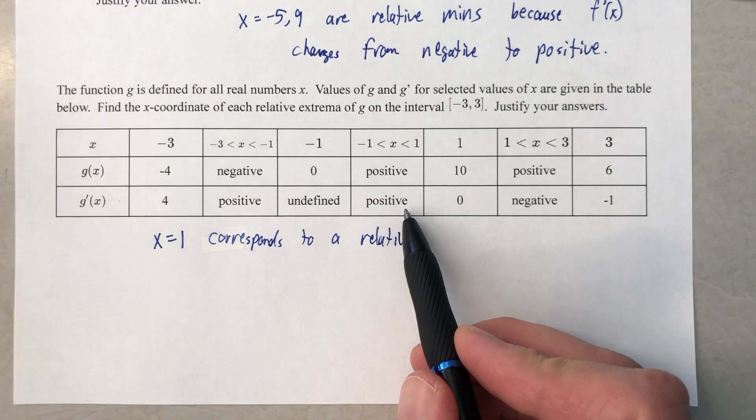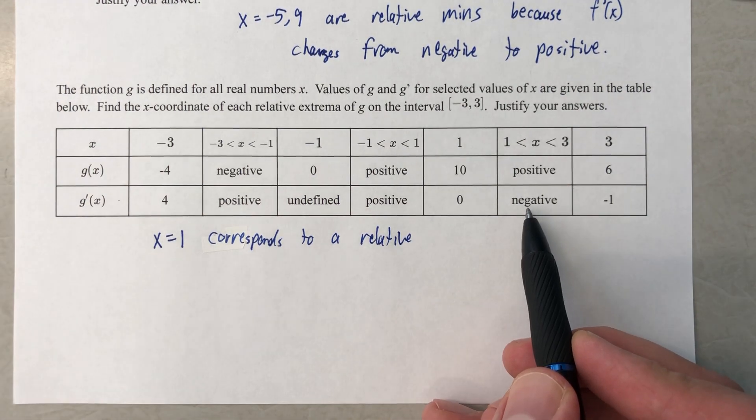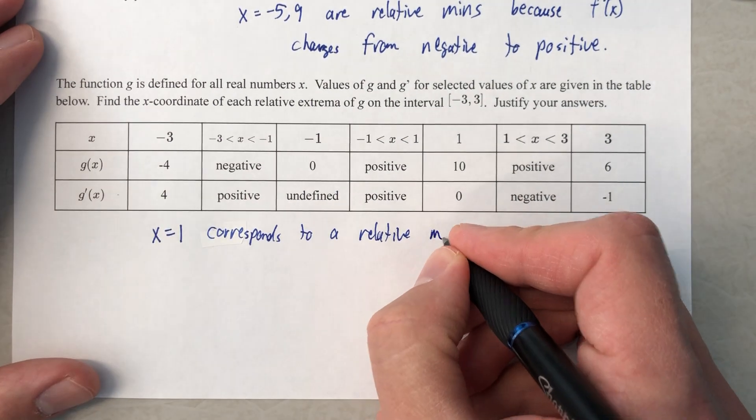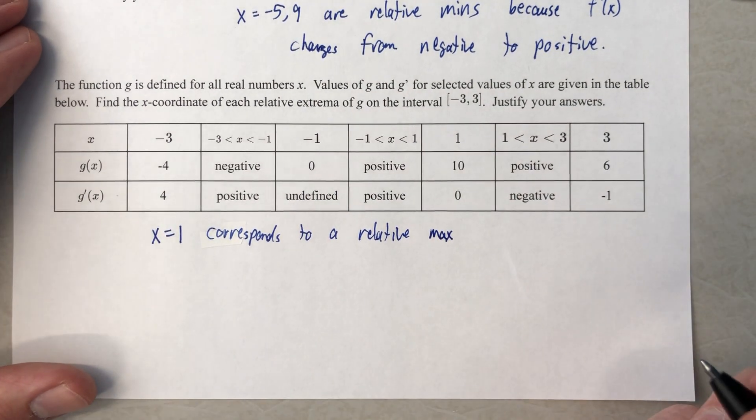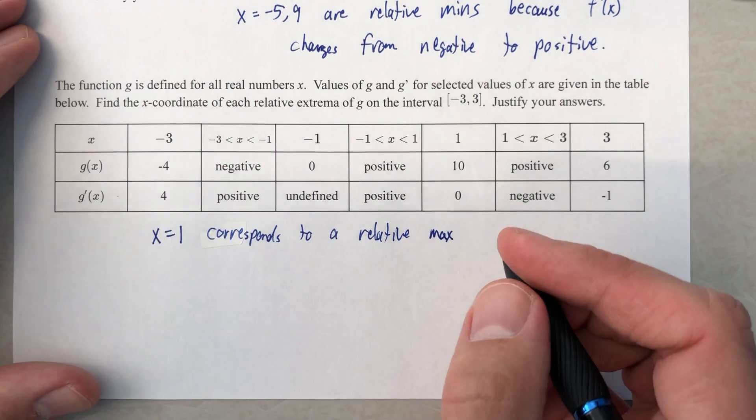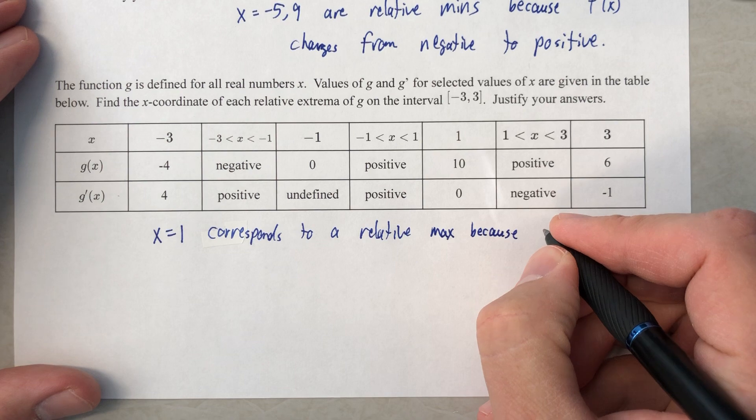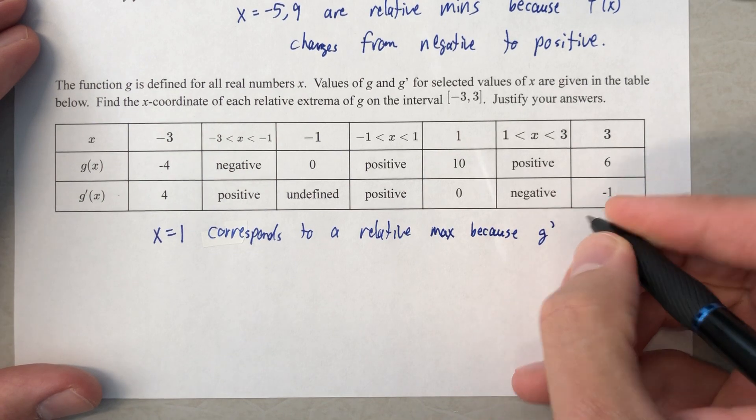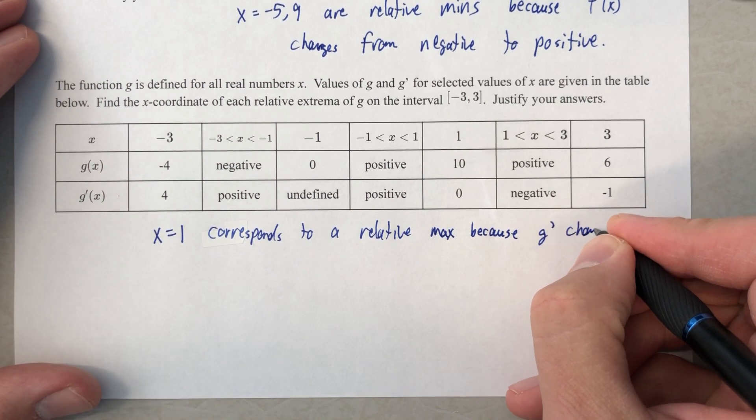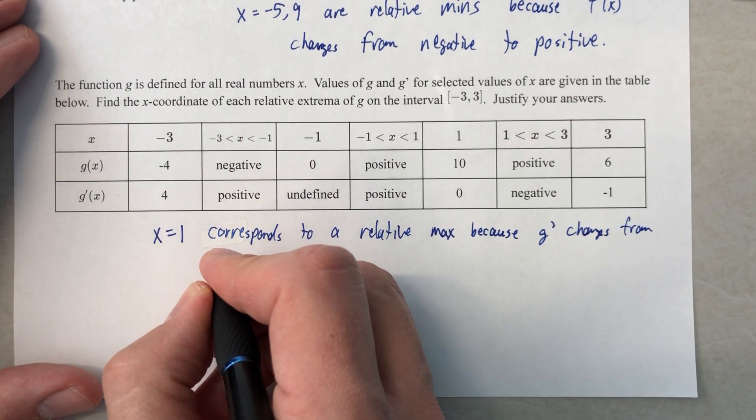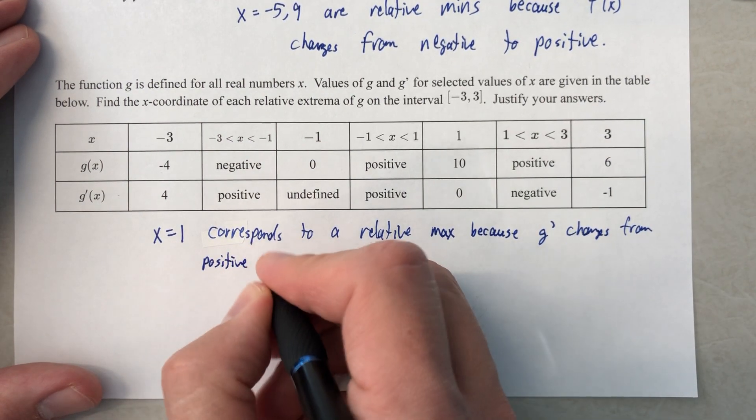The derivative changes from positive to negative, so the function changes from increasing to decreasing. So relative max, and it says justify your answers. Relative max because g prime changes from positive to negative.